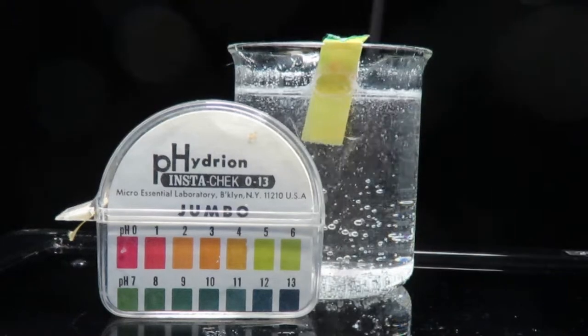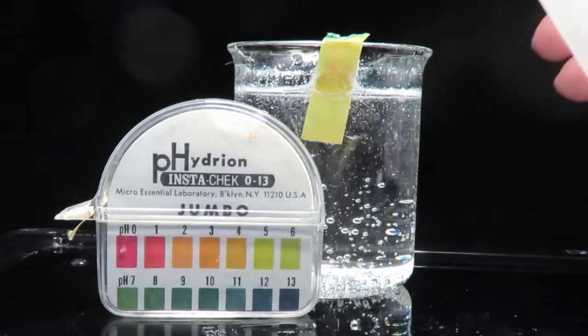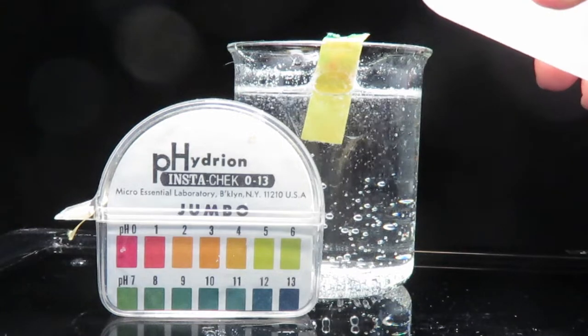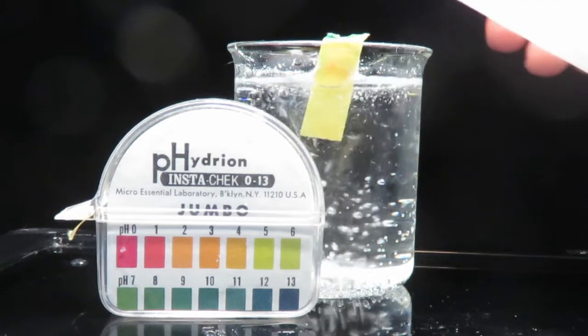Then if I dump a bunch of sodium hydroxide, a strong base in, it changes again too, back to maybe a little green, a little more alkaline, but not a huge change.